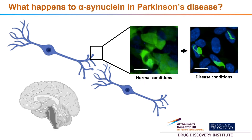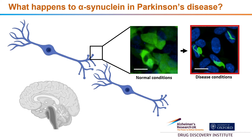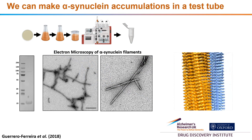So what happens to alpha-synuclein? In normal conditions it is soluble and diffuse in the cell — alpha-synuclein is shown here in green. However, in disease conditions, it then takes on this highly aggregated insoluble state and forms these highly toxic inclusions. What we want to try and do in the lab is to model this accumulation of alpha-synuclein so that we can study the effects it has on cells. We can make alpha-synuclein accumulations in a test tube.